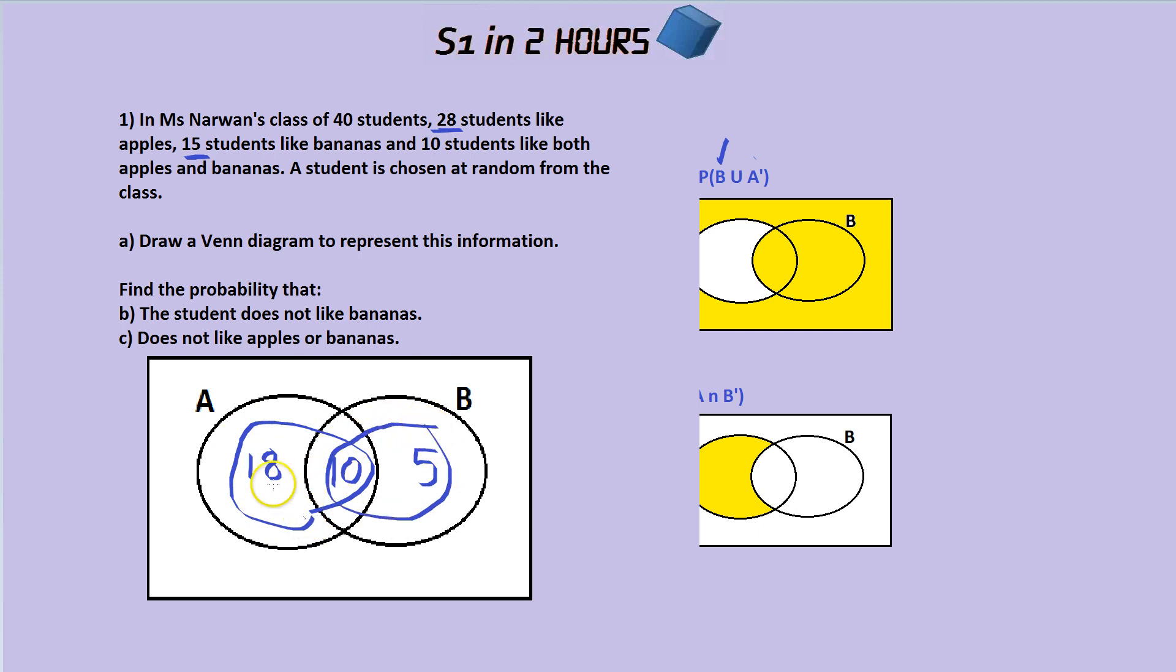So this bubble now adds up to 28, just like this bubble adds up to 15. Let's count what we've got so far. I always like to finish off the Venn diagram. We've got 18, 10, and 5. That adds up to 33, I reckon. So how many people were in the class in total? Well, there were 40 students. So the final bit of information are the people outside both bubbles. Notice inside the bubbles, it adds up to 33, and there's 40 students in total. That means there must be 7 students outside of both bubbles.